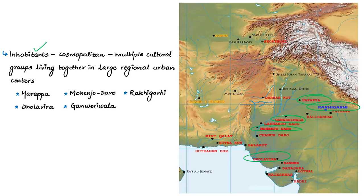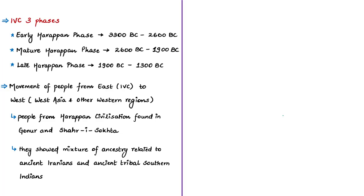The Harappan Civilization was the first major civilization in South Asia. In general, the IVC can be classified into three phases: the Early Harappan Phase from 3300 to 2600 BCE; the Mature Harappan Phase from 2600 to 1900 BCE; and the Late Harappan Phase from 1900 to 1300 BCE.